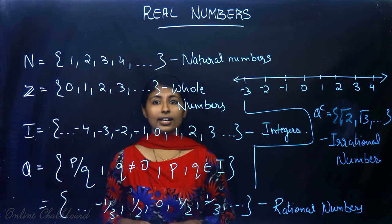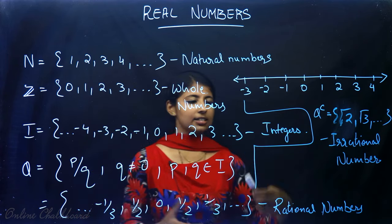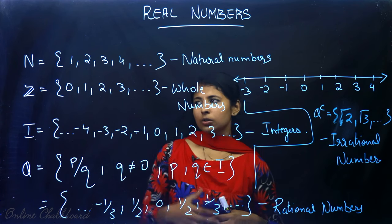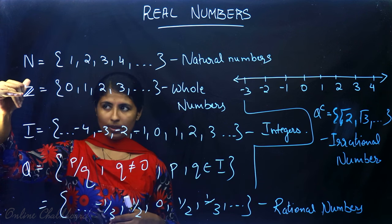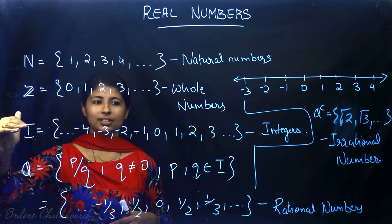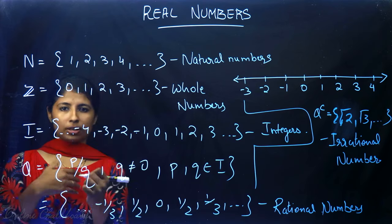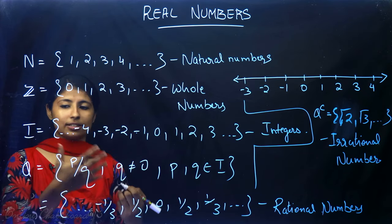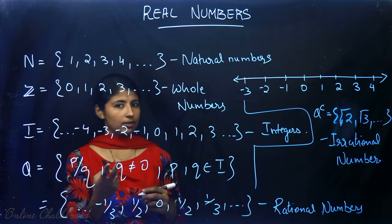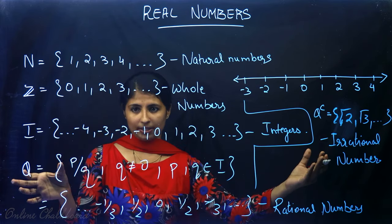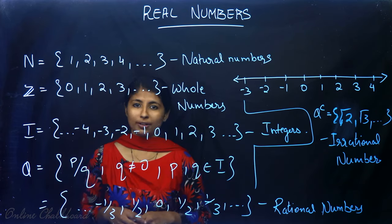So our question is: what is a real number? The set of all these numbers — natural numbers, whole numbers, integers — as well as irrational numbers, all combined together, gives us the real numbers. Note that all natural numbers are whole numbers, whole numbers are integers, and every integer can be expressed in the form P/Q (e.g., -4 = -4/1), so every integer is also a rational number. So there are just two types: rational and irrational. The combination of these two together is called real numbers. This is what we learned in the previous class.